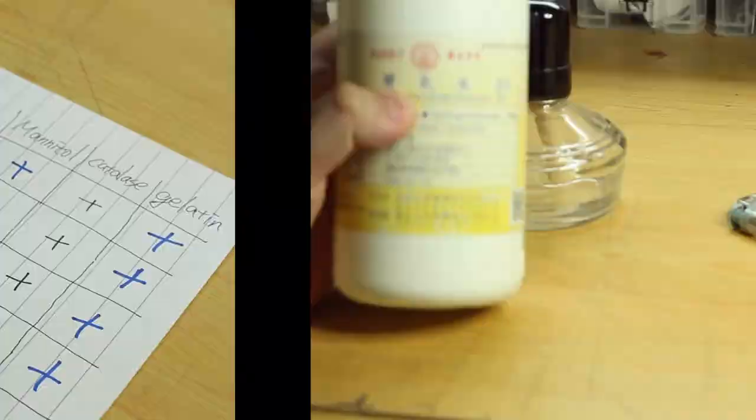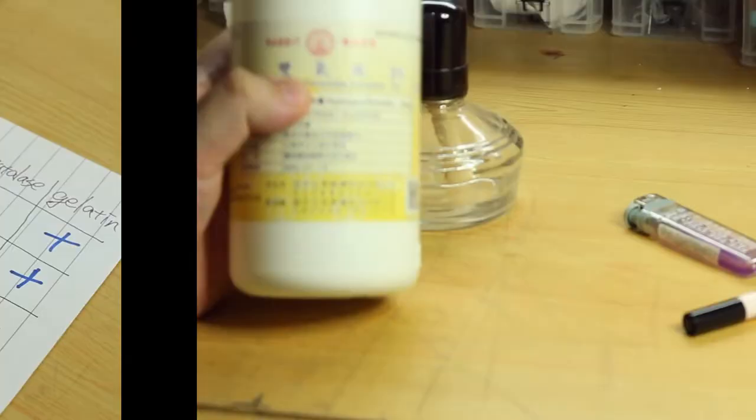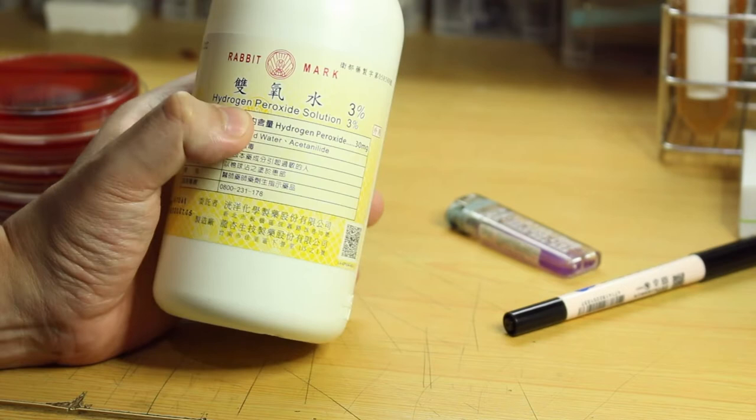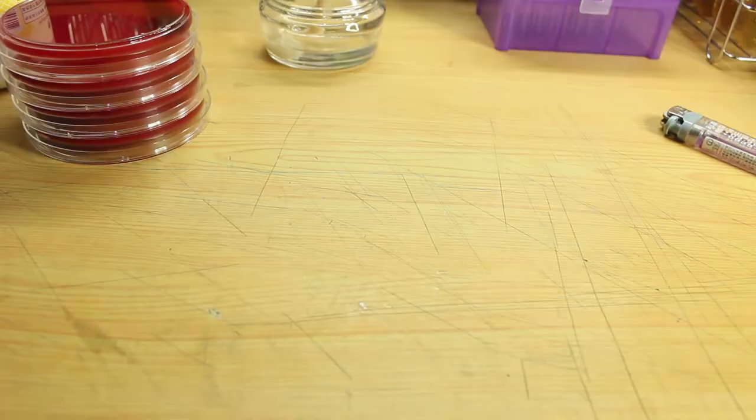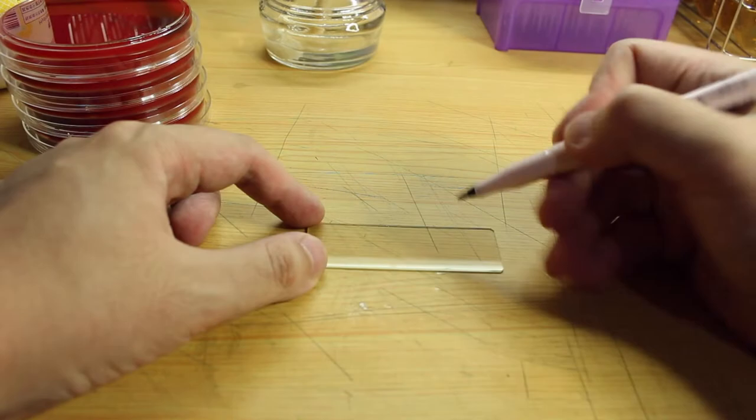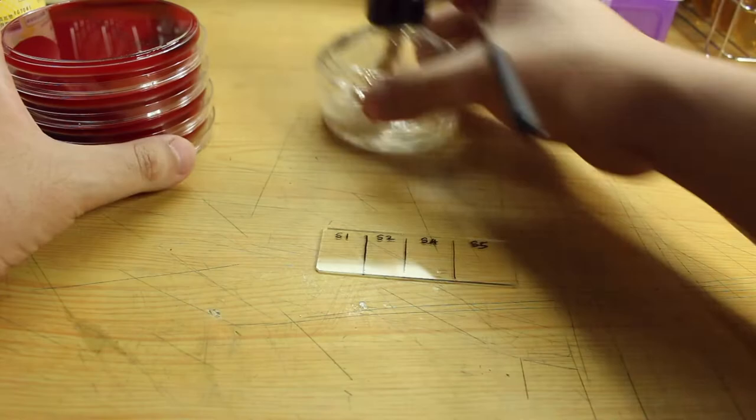The second test I'm going to do is called catalase test. Catalase is an enzyme that breaks down hydrogen peroxide into oxygen and water, which can help bacteria deal with this harmful chemical. To do this test, simply put some bacteria on a glass slide and drop hydrogen peroxide onto it. Bacteria that are catalase positive will generate bubbles instantly, while a negative one will not.